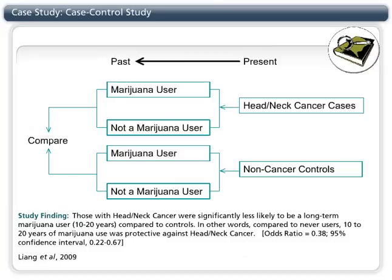The study found that those with head-neck cancer were less likely to be long-term marijuana users. In other words, long-term marijuana use was protective against head-neck cancer. This result may surprise you, as it contradicts what you might have expected regarding the risks of smoking marijuana.